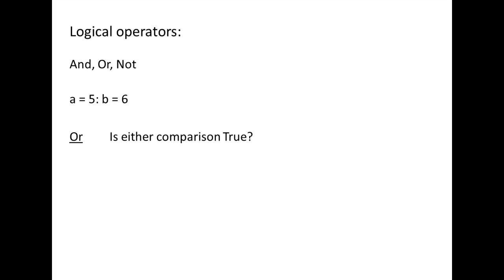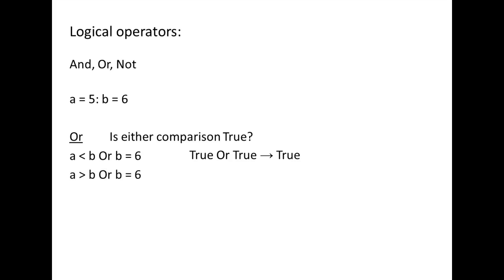When you use the OR operator, you ask the question: is either comparison true? If the answer is yes, a true is returned; if the answer is no, a false is returned. For example, a less than b OR b equals 6: is either comparison true? 5 less than 6 OR 6 equals 6 — true or true. Since at least one of the comparisons is true, the entire expression is replaced by true. Next, a greater than b OR b equals 6: 5 greater than 6 OR 6 equals 6 — false or true. Since at least one of the comparisons is true, the entire expression is replaced by true.